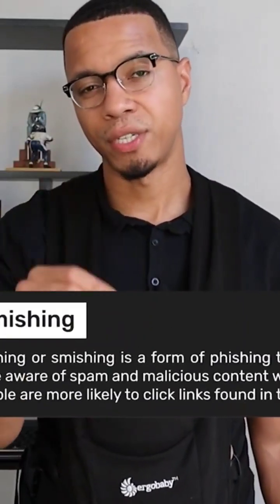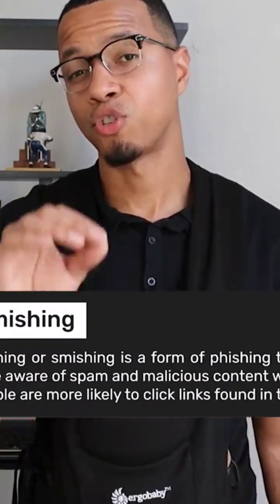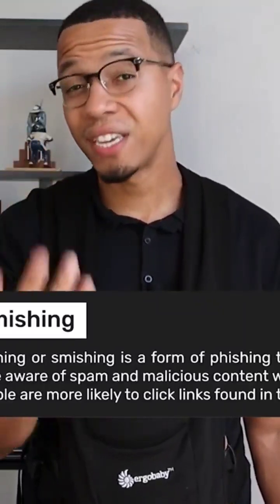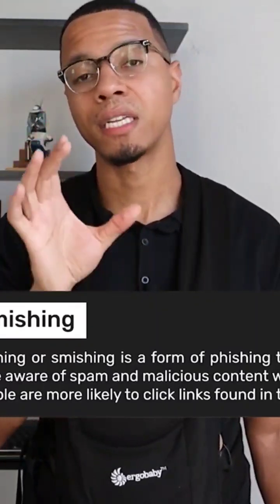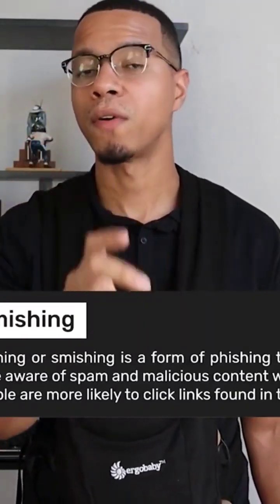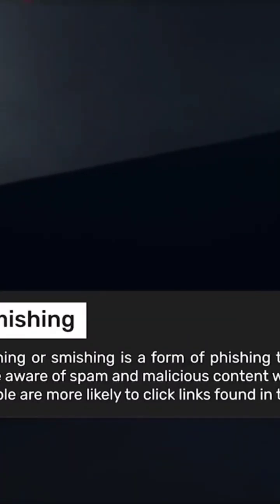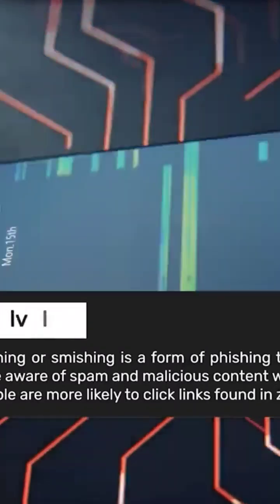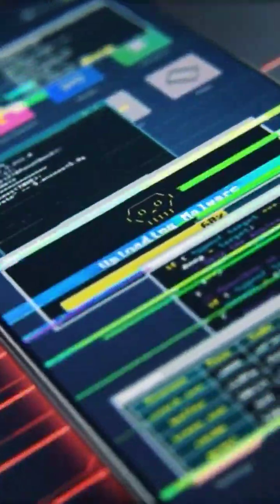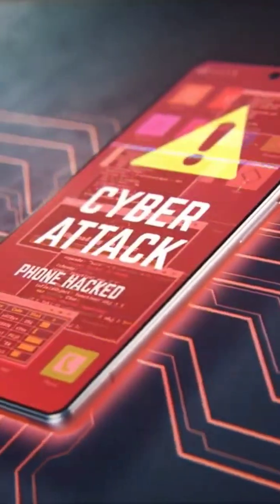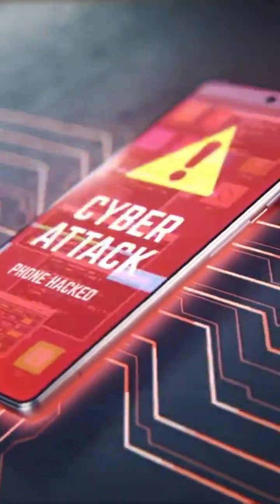Smishing is a form of phishing that is specifically used to target mobile phones and mobile devices. It is a form of phishing in which an attacker uses a compelling text message to trick targeted recipients into clicking a link and sending the attacker private information or downloading malicious programs to a smartphone.